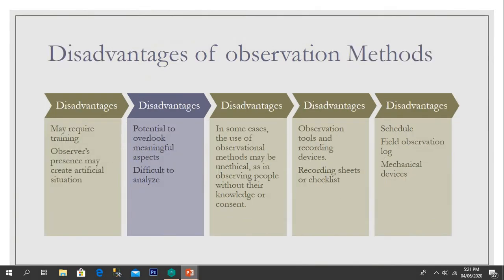As with all topics, if there are advantages there are also disadvantages. Observation methods may require trained observers, the observer's presence may create an artificial situation, there is potential to overlook meaningful aspects, and results can be difficult to analyze. In some cases, the use of observational methods may be unethical — for example, observing people without their knowledge or consent.